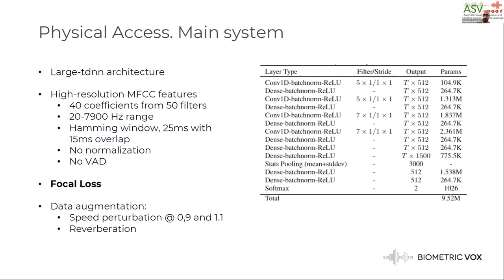As input features, we use high resolution MFCC features. And as already mentioned, we use focal loss instead of the traditional cross-entropy criterion as the objective function. The basic idea of this loss is to give more emphasis to hard-to-classify examples and less to the easy ones. It seems to work particularly well for class imbalance problems, like the problem at hand.